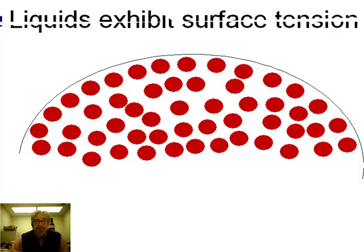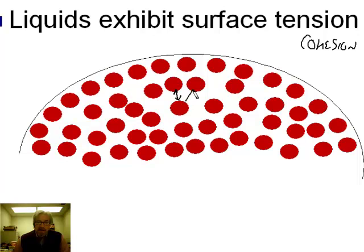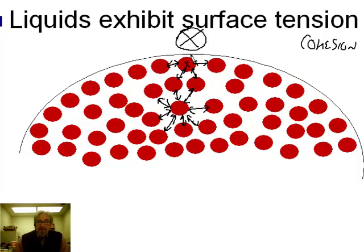Another property that exists for liquids but not gases is surface tension — a net inward attraction that all molecules in a liquid have toward the center of mass, also called cohesion. A particle in the middle of a liquid is attracted equally in all directions by neighboring particles' IMFs. A particle on the surface, however, has no neighboring particles on the outside pulling it outward, so it experiences a net inward pull. This is why water forms droplets.